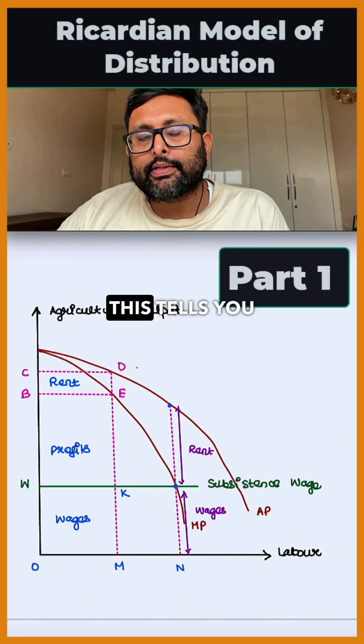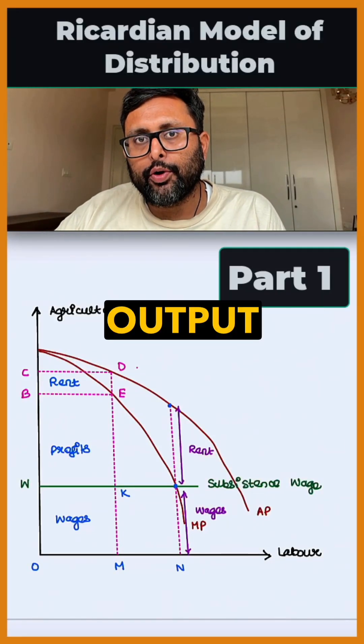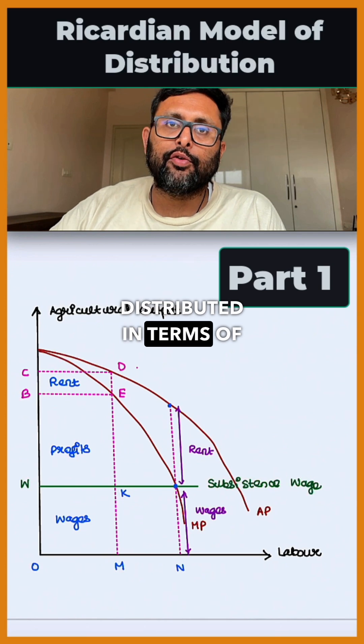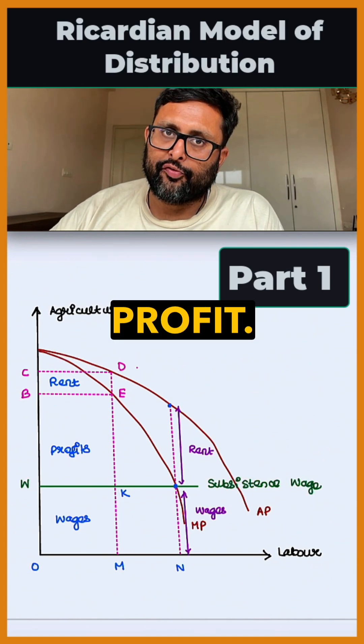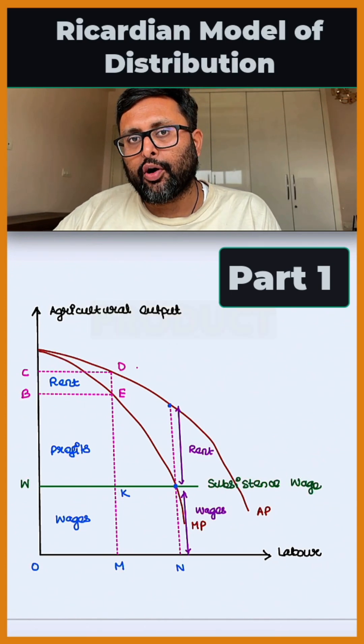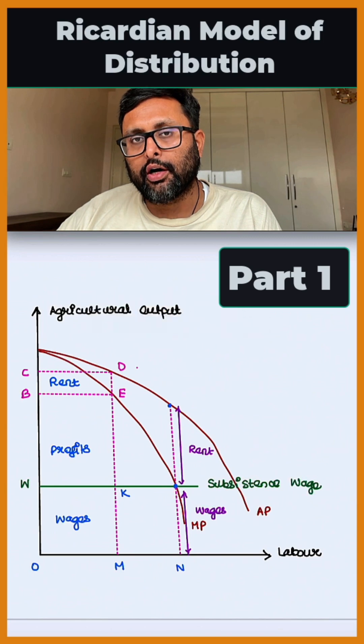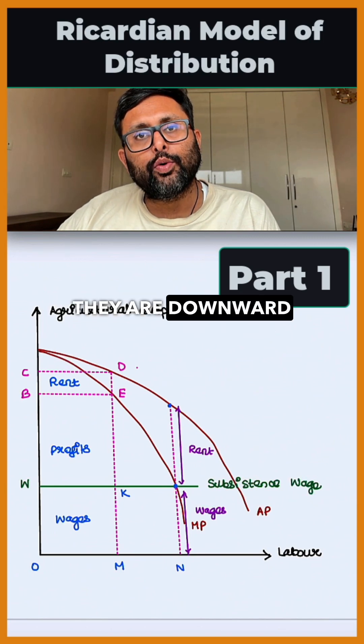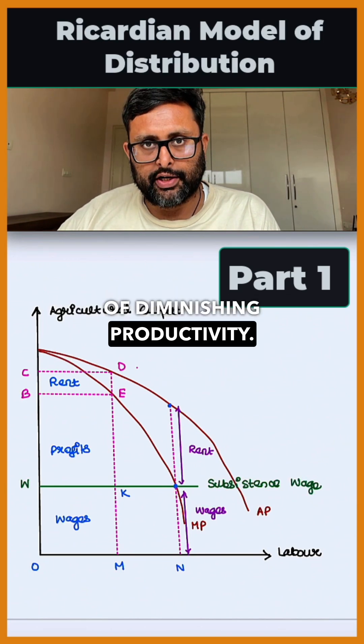Ricardian theory of distribution tells you how total output is distributed in terms of rent, wages, and profit. You can see the average product and marginal product curves of labor. They are downward sloping because of diminishing productivity.